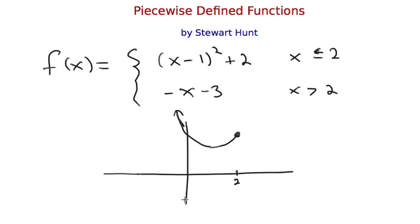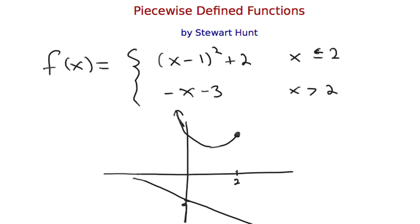Now I graph minus x minus 3. This is a line with negative slope going down, and it goes through 0, negative 3. The value of the function isn't valid for values less than 2, so we cut it off and erase the part to the left of 2. I use an open circle here because the value of the function at 2 is not given by this line — it's only the first piece. And so this is what the graph of f looks like.